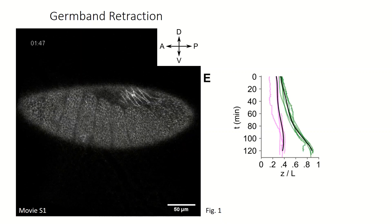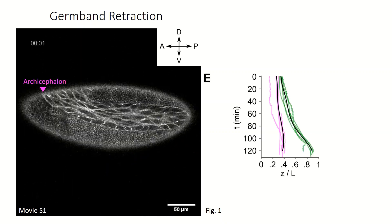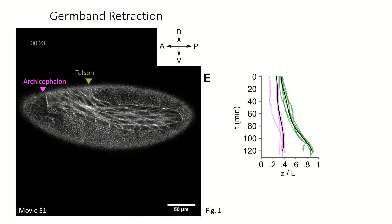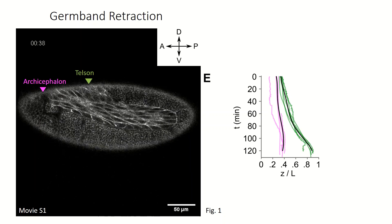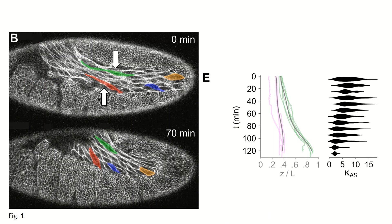Progress through retraction can be tracked using the acron and telson positions as they move along the length of the embryo. Notably, the amnioserosa cells begin this stage highly elongated and round up during retraction. The distribution of their aspect ratios is plotted through time.